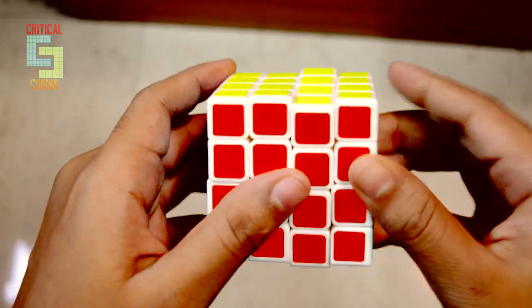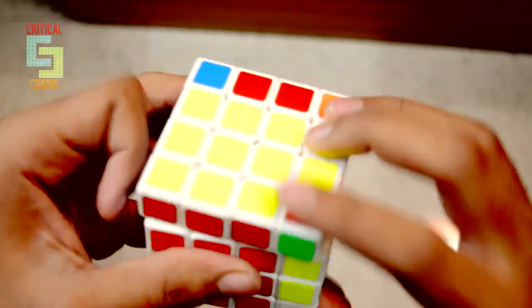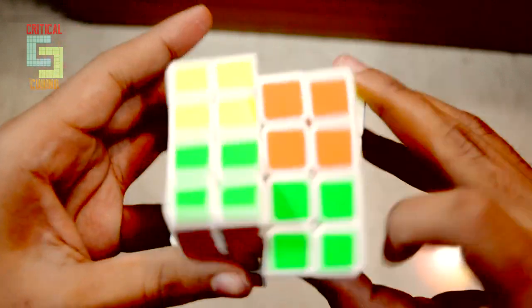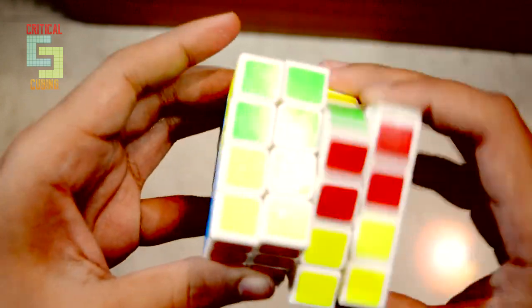The outer layers are fast and the inner layers are also fast, which helps with the PLL parity. The stickers are like the Moyu standard bright shades and they look beautiful on it.